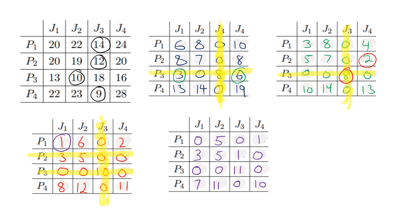Now we have finally reached the end. Let's count the lines again: 1, 2, 3, 4. So finally we have reached a point where we can allocate our jobs to specific people, which we'll do on the next slide.